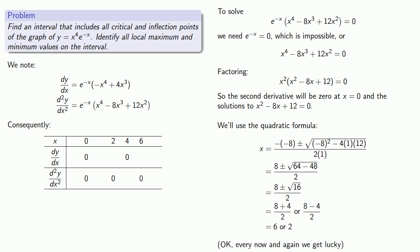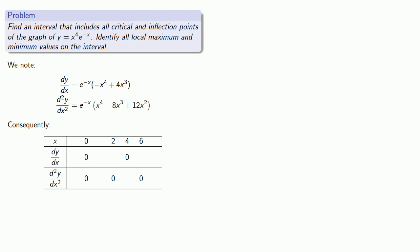Okay, so every now and then we get lucky, and we do have a quadratic with integer solutions. And so we have our derivatives in factored form. We have the places where the first derivative is zero. We have the places where the second derivative is zero.